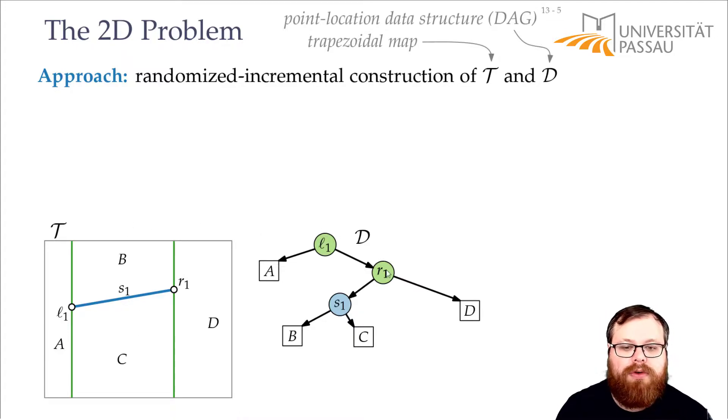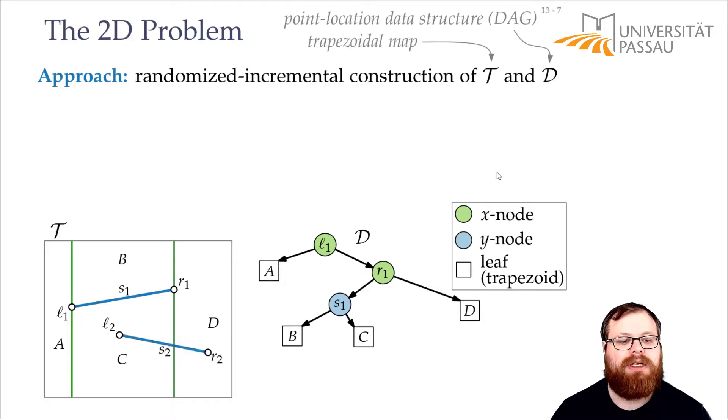So we can walk through this data structure, and in every step it divides it into two parts. Now let's have a look at the next step. We take our segment S2 and we add it here. What do we have to do? We said in the 1D step, we need two steps. First we have to query, figure out where the point lies, and then we have to destroy and rebuild.